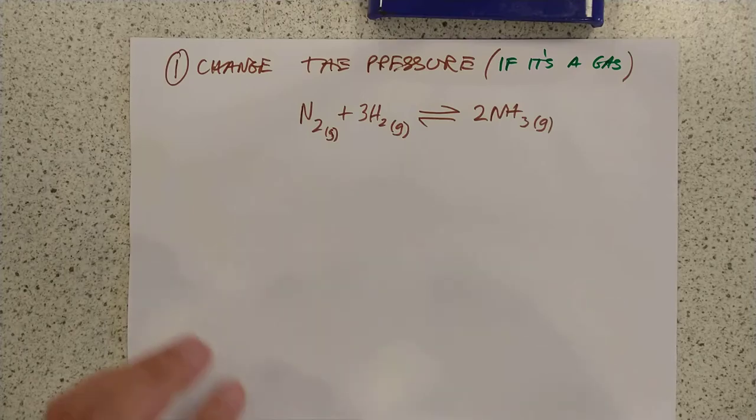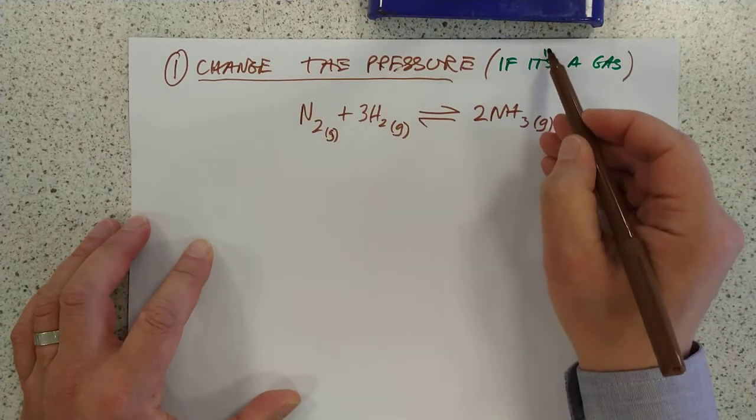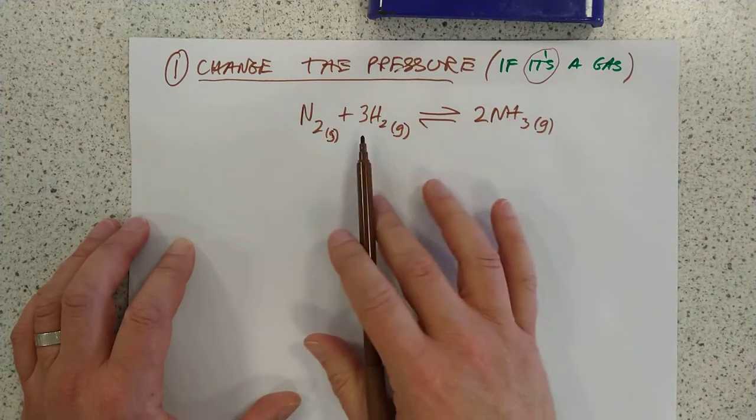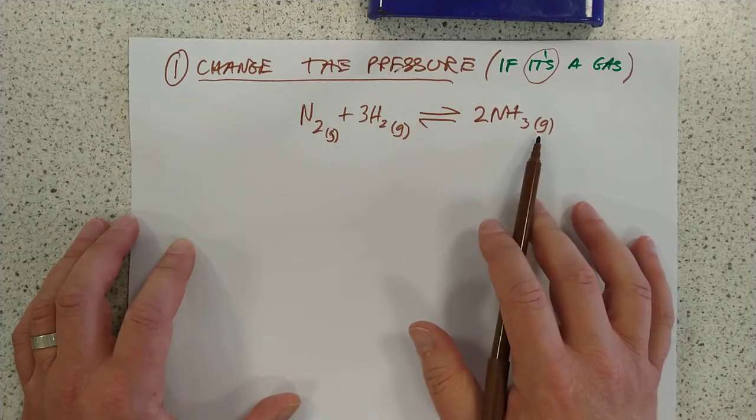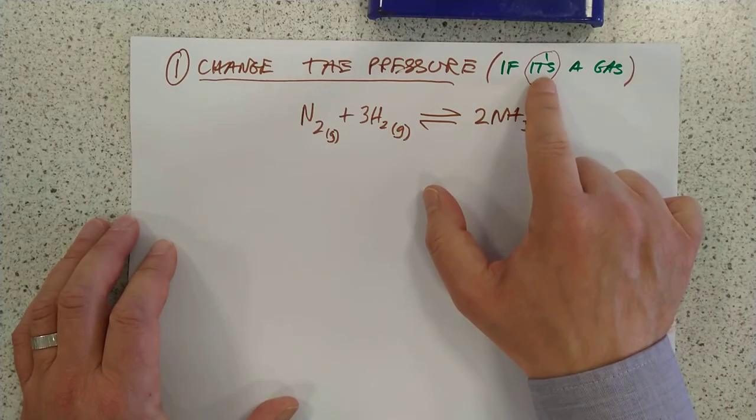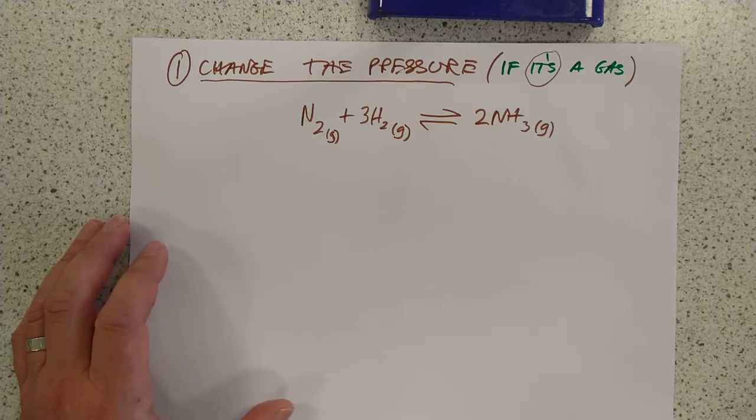Method the first. Right. You can change the pressure if you're dealing with a gas. Oops, sorry. I'm swearing. If the reactants or products, which, by the way, doesn't really make sense anymore, but we'll still call these reactants and we'll still call that products. So, if the reactants or products are a gas, changing the pressure can change your balance. And here is why.